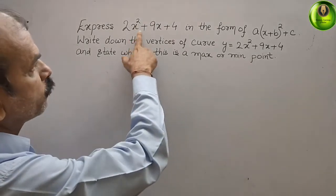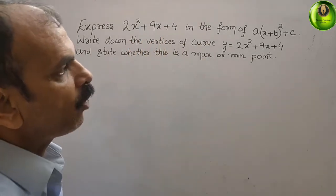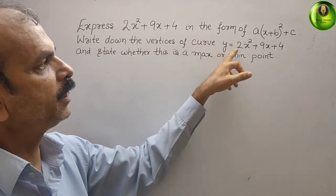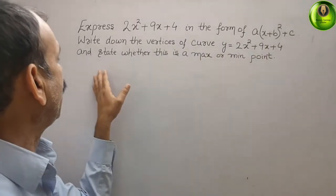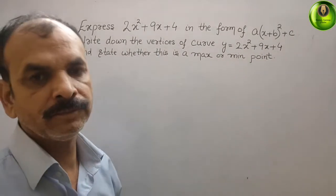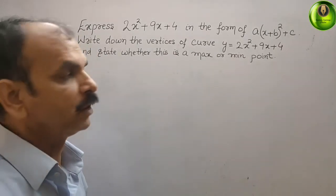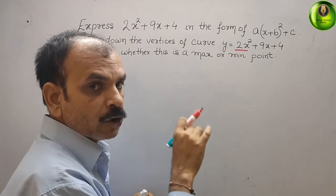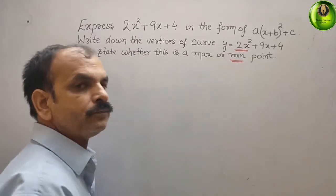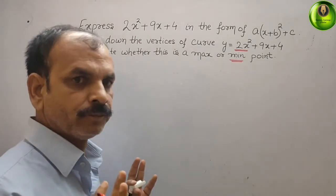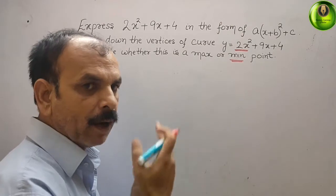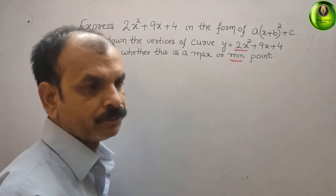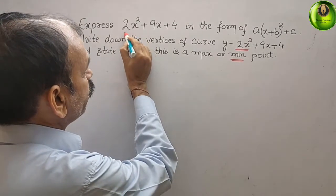The question is: express 2x² + 9x + 4 in the form a(x + b)² + c, and write down the vertices of the curve y = 2x² + 9x + 4, stating whether it is a maximum or minimum point. The coefficient of x² is positive, so you will get a minimum point. If it is negative, you will get a maximum point.